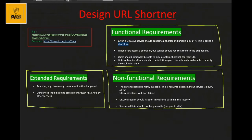Non-functional requirements for large-scale systems generally include: first, the URL shortener should be highly available, because if the service is down, all redirections will fail and users won't trust the system. Second, URL redirection should happen in real time with minimal latency — users should not feel any lag when clicking a shortened URL.